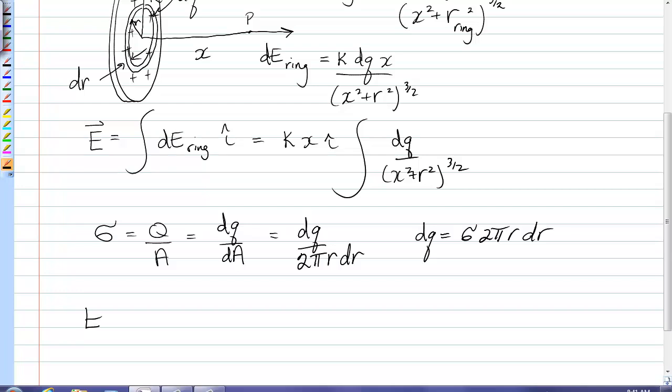So I have E for my disk. I should call this E_disk. dq is equal to k x i hat. I'm going to pull the sigma out, I'm going to pull the pi out, but I'm going to leave the 2r dr inside the integral, and the x squared plus r squared in there too.